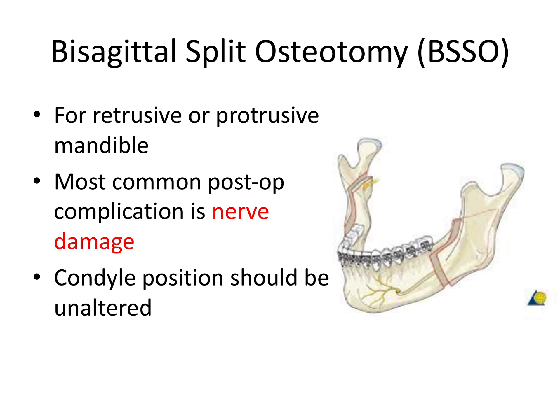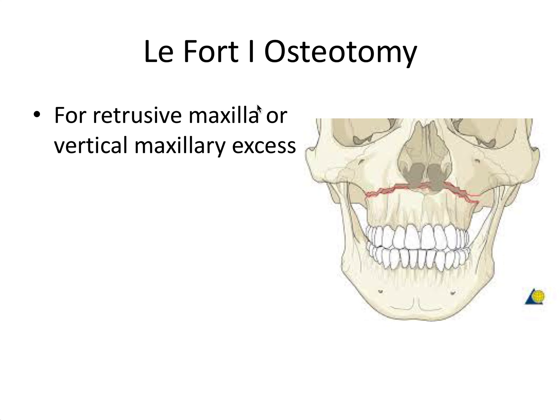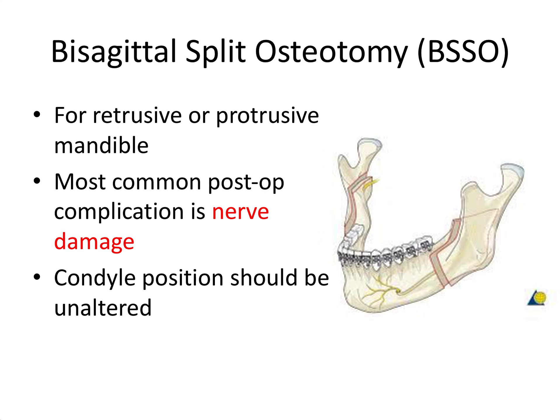For a board exam case example: if a patient is class 3, knowing that alone isn't enough — you need to know if it's due to a maxillary deficiency or a mandibular excess. If it's a maxillary problem, treat with a LeFort 1 osteotomy; if it's a mandibular problem, treat with a BSSO; and if it's a combination of both, a double jaw surgery combining both procedures would be the treatment of choice.